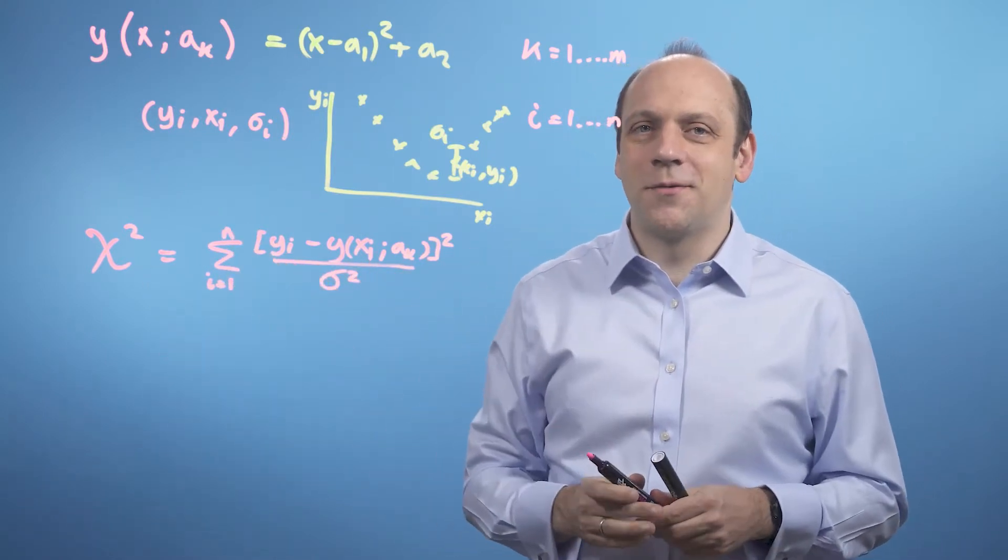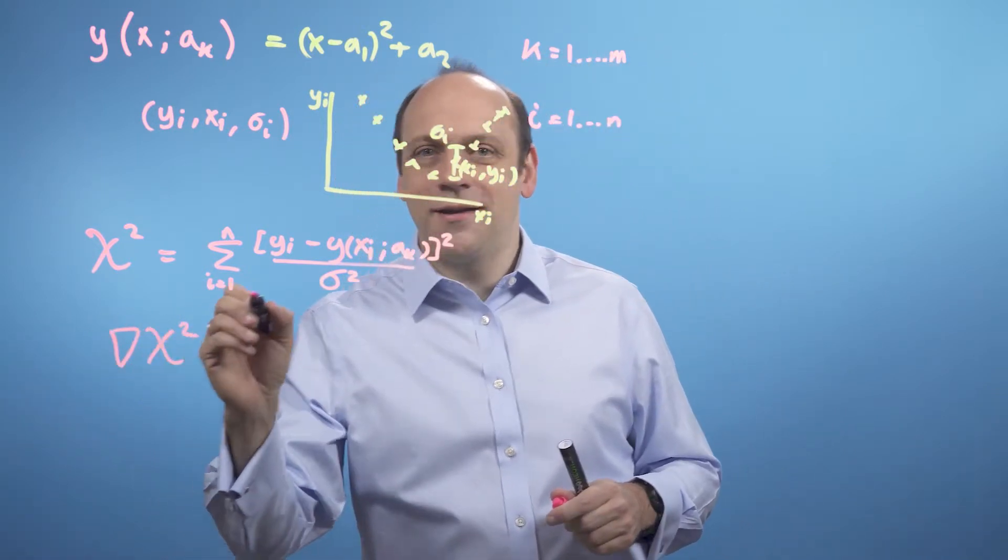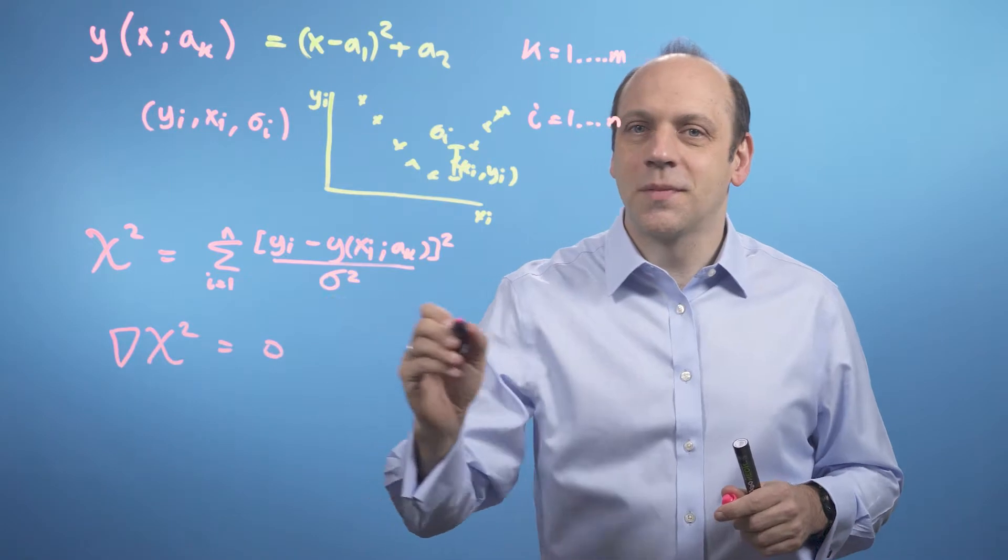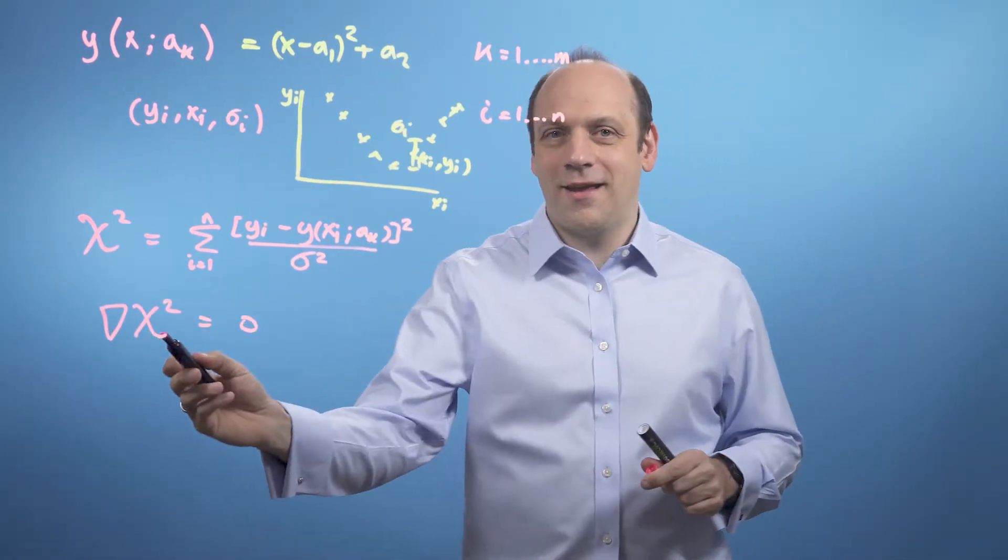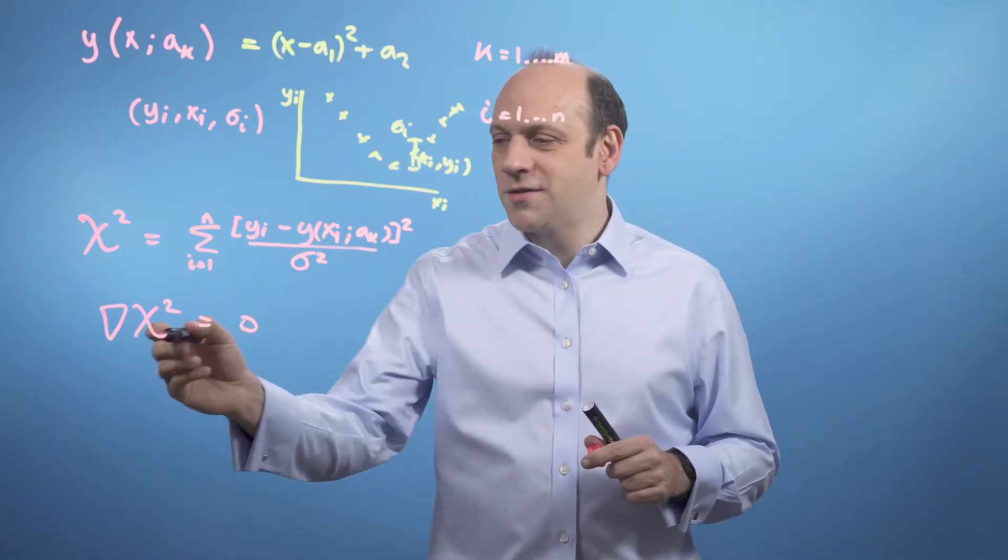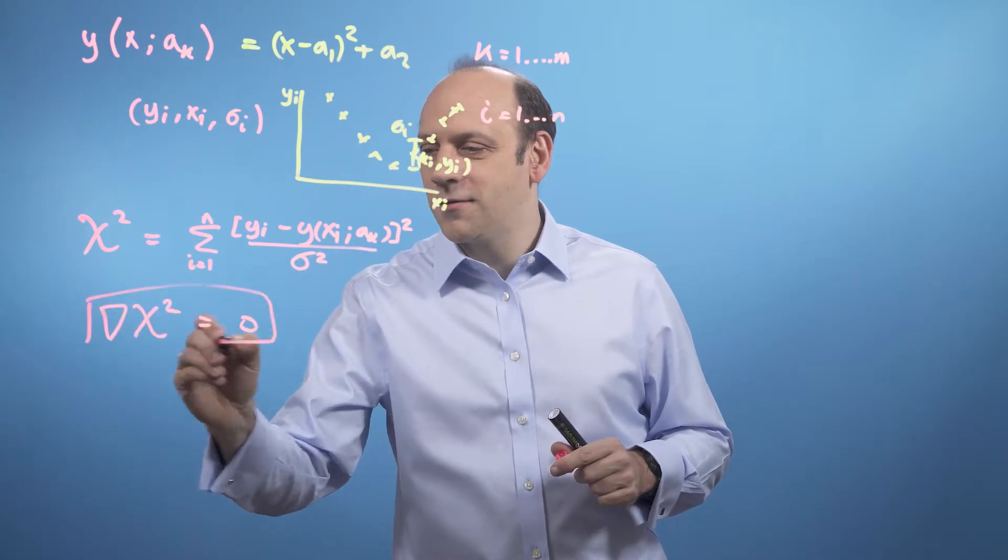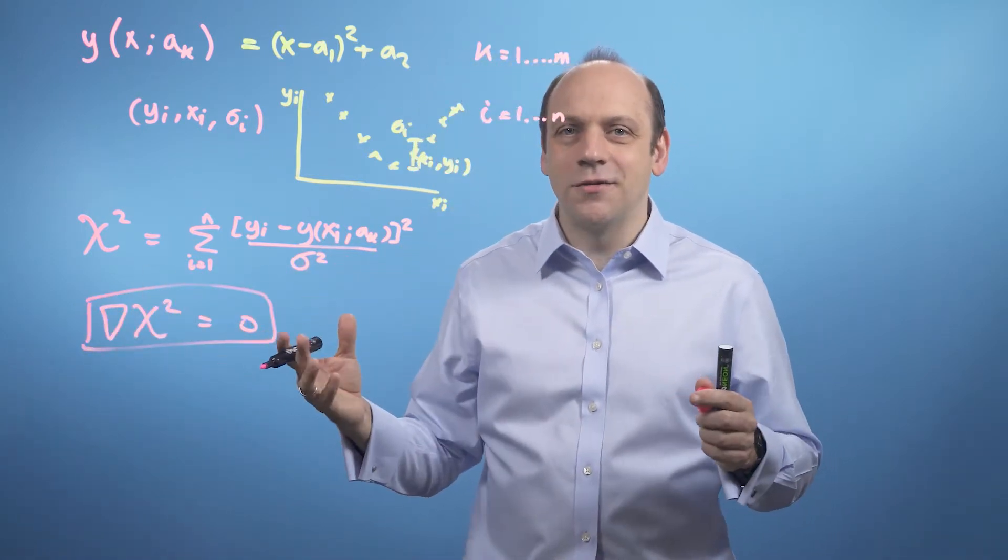And my minima for chi squared is, of course, going to be when the grad of chi squared is equal to 0. Now, in the general case, I might be able to write down an expression for grad here, but I might not be able to solve it algebraically. So instead, I'm going to look to solve grad chi squared equals 0 by steepest descent, going down the contours.